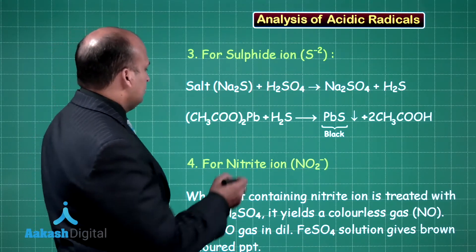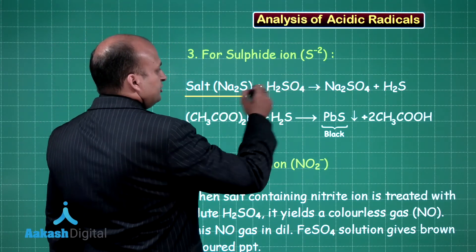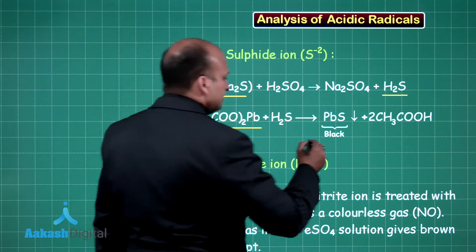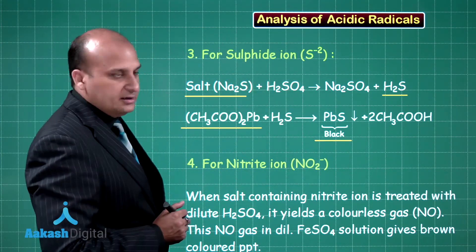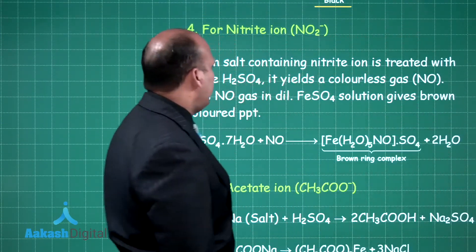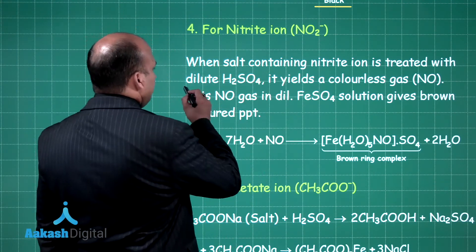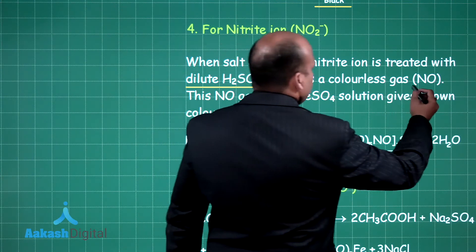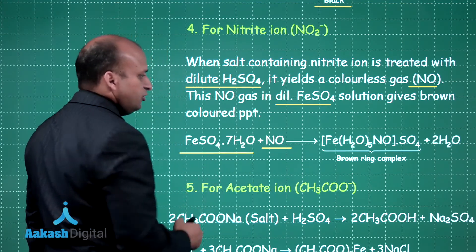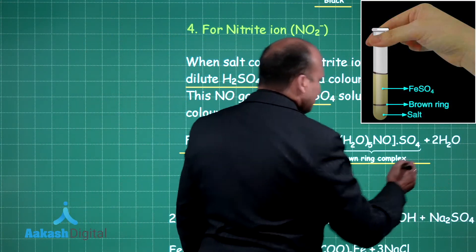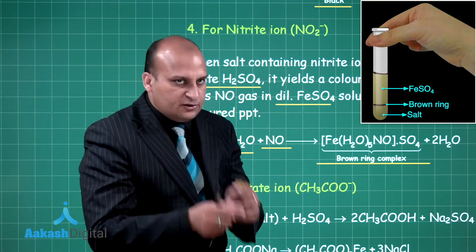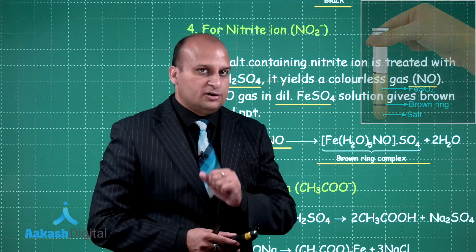For sulfide ion: on addition of H2SO4, you get H2S. When you add lead acetate to it, you get lead sulfide — a black colored precipitate — confirming the presence of sulfide ion. For nitrite ion, treated with dilute H2SO4, it yields colorless NO gas. Adding dilute FeSO4 to the NO produces a brown ring complex, confirming the presence of nitrite ion.